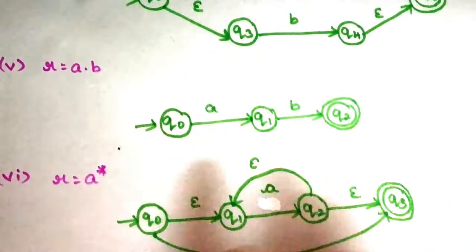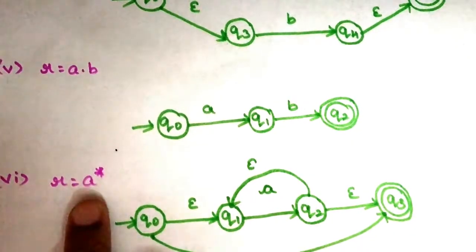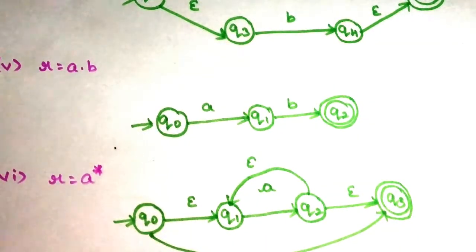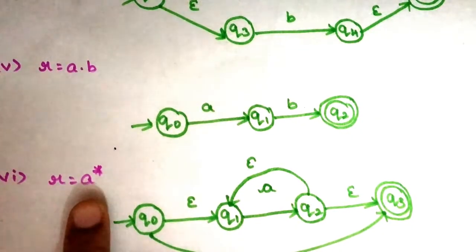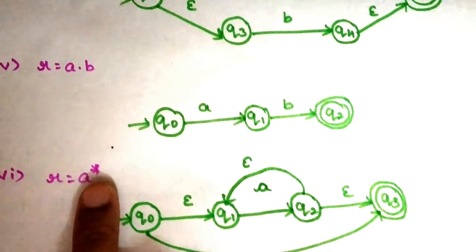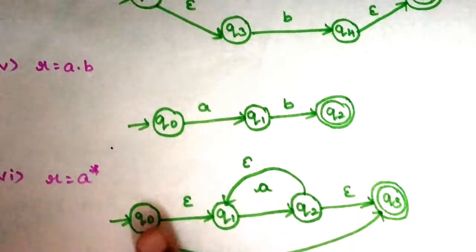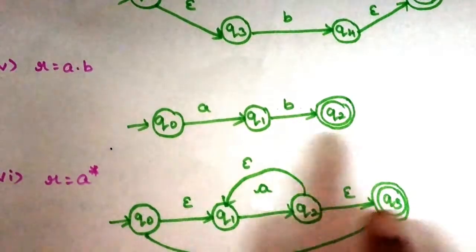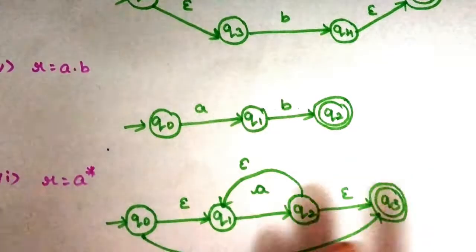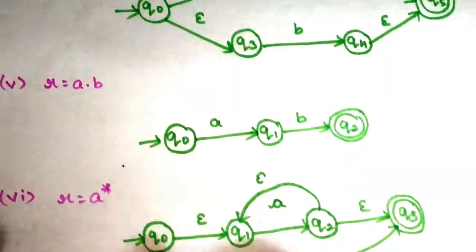R equal to A star — that is A closure. A star, or A closure, means: along with the null string, there is an infinite number of times the string can repeat. If you apply any string to a closure operation, you apply it as a self-loop. You can add a new start state and a new pin state. So: A plus B is the union structure, A dot B is the concatenation structure, and A closure is the self-loop structure.